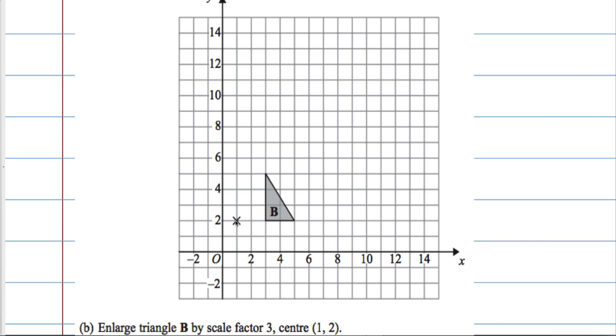One way of doing it, very straightforward, is count the distance from the centre to each vertex. This would be 2 to the right. If I enlarge it by a scale factor 3 I need to go 6. So, 1, 2, 3, 4, 5, 6. Mark the vertex.